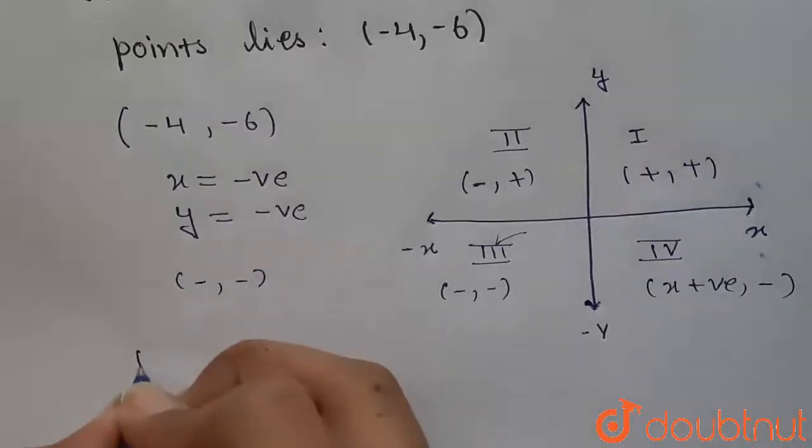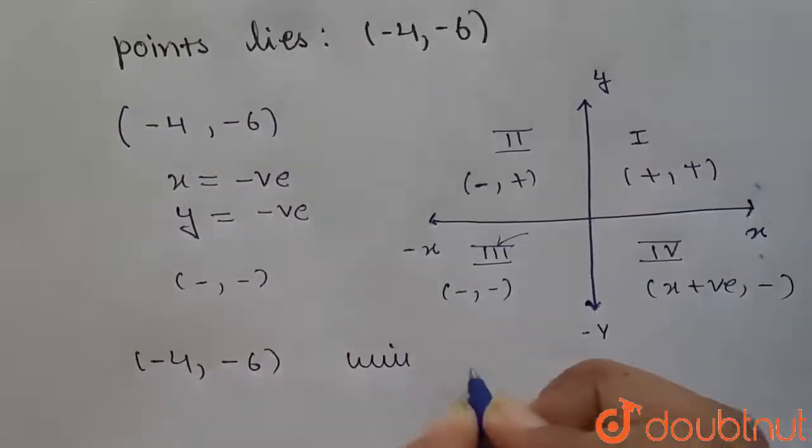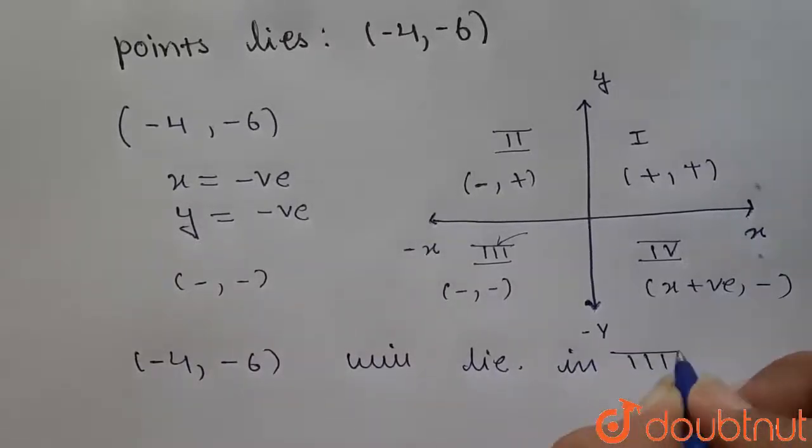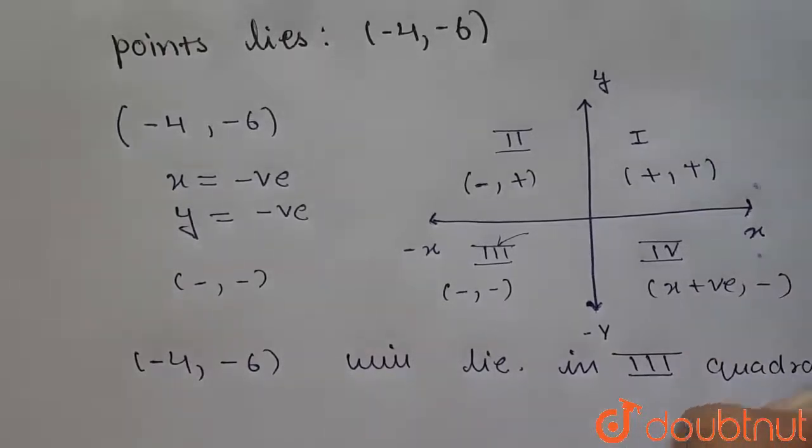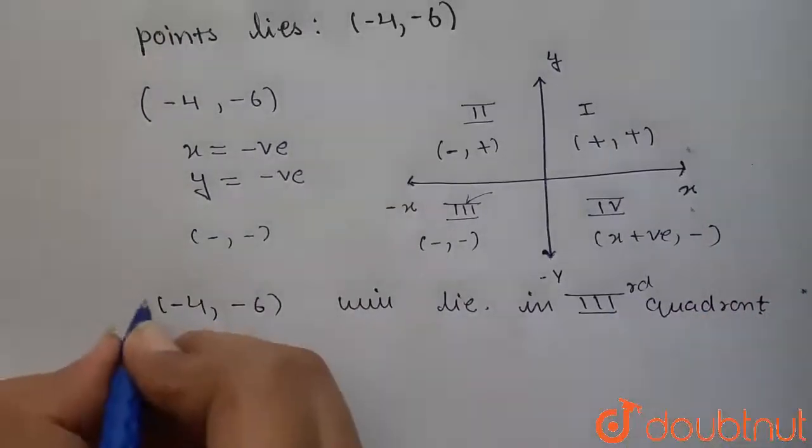So the given point that is minus 4 comma minus 6 will lie in the third quadrant. This is the required answer. Thank you.